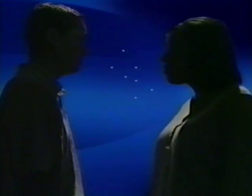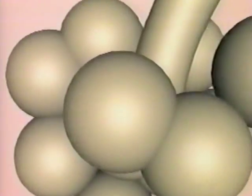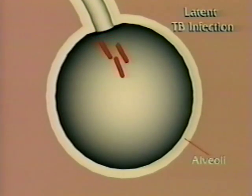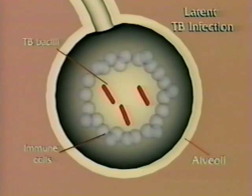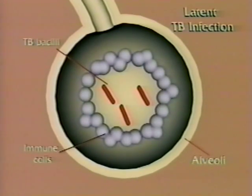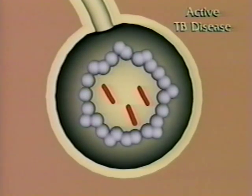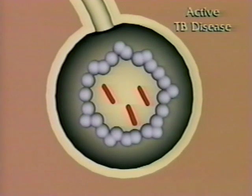Usually, the infection remains latent. In latent TB infection, the bacteria are made inactive by the body's immune system. The bacteria can remain inactive for many years, perhaps for life. Most people who become infected with TB don't get active TB disease. However, an infected person remains at risk of developing active TB disease at any time.